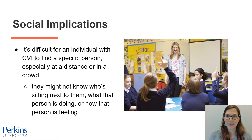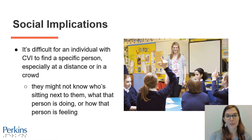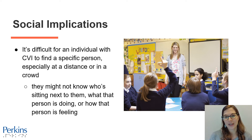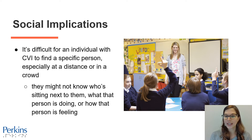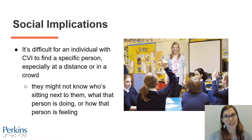Let's talk a bit more about those social implications that can happen. It's difficult for an individual with CVI to find a specific person, especially at a distance or in a crowd. They might not know who's sitting next to them, what that person is doing, or how that person is feeling. In this photograph, there's a classroom with lots of students sitting around a table and the teacher is standing at the front. If there's an individual with CVI in this class, it might be hard for them to know exactly who's sitting next to them, who's sitting across the table, what their peers are doing, how they're feeling. They might be missing out on a lot of that information.